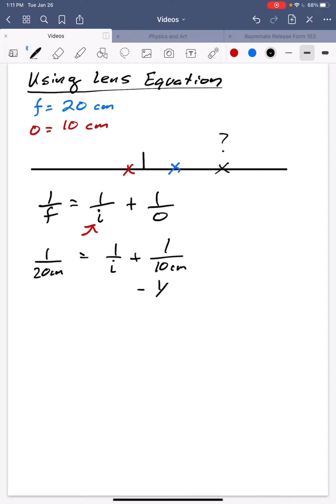And then I would subtract this over. So now I get 1 over 20 minus 1 over 10 equals 1 over i. And that would be 1 over 20 minus 1 over 10 would be 1 over 20 minus 2 over 20. So it'd be negative 1 over 20 centimeters. This tells me that 1 over i equals negative 1 over 20 centimeters or i equals negative 20 centimeters.